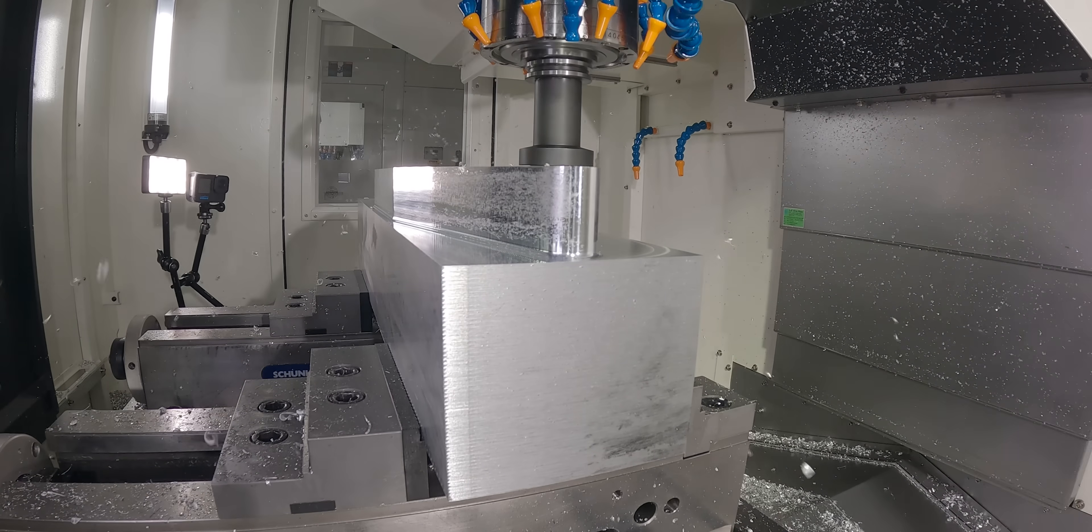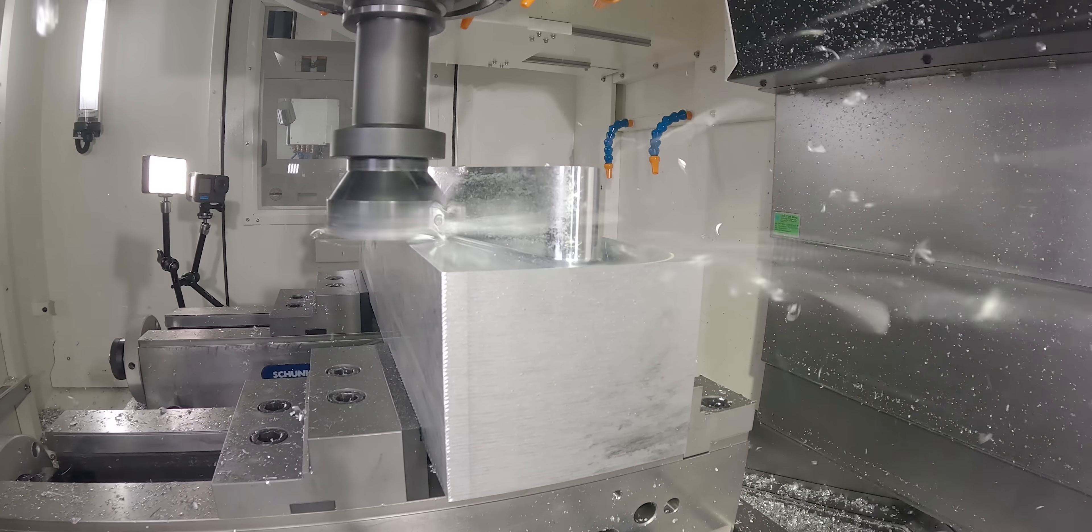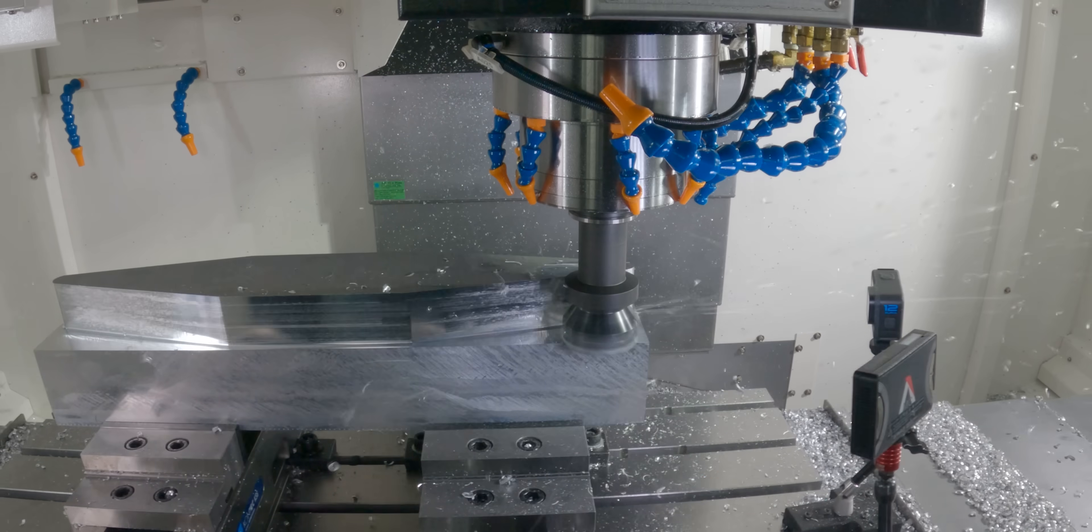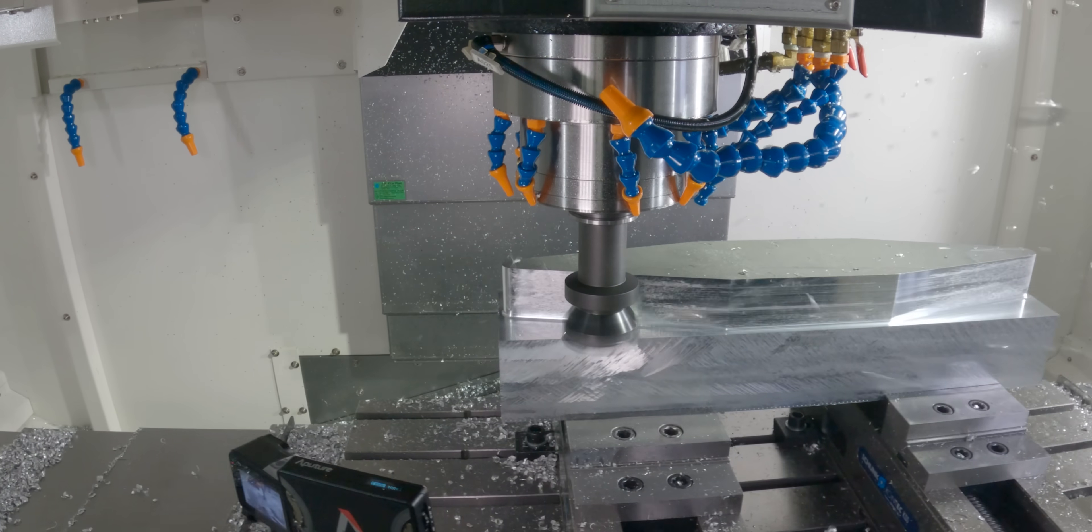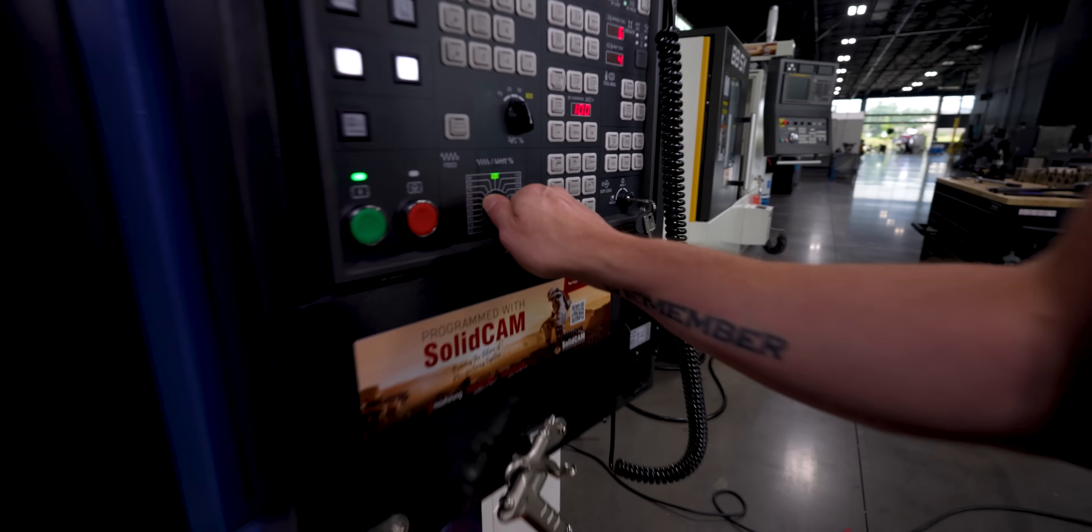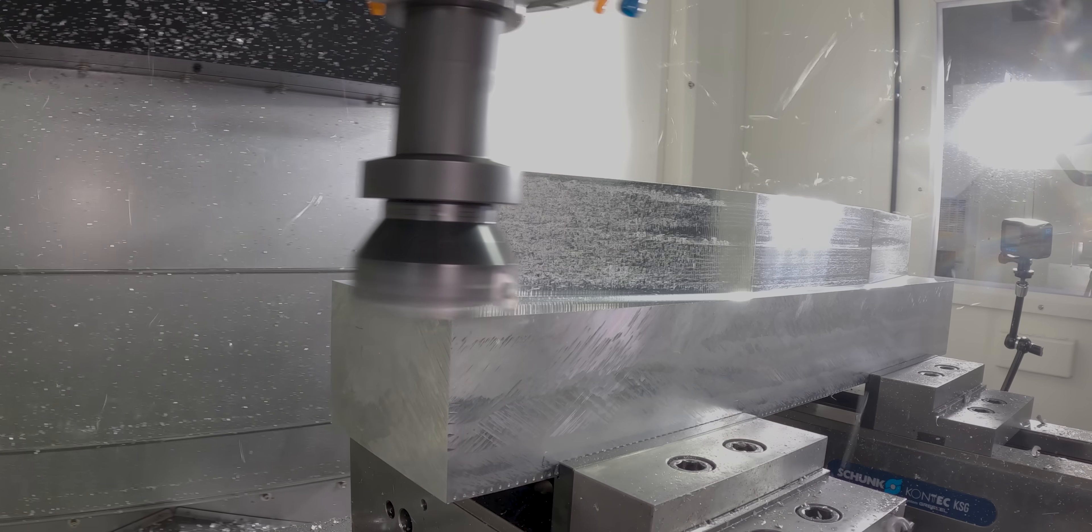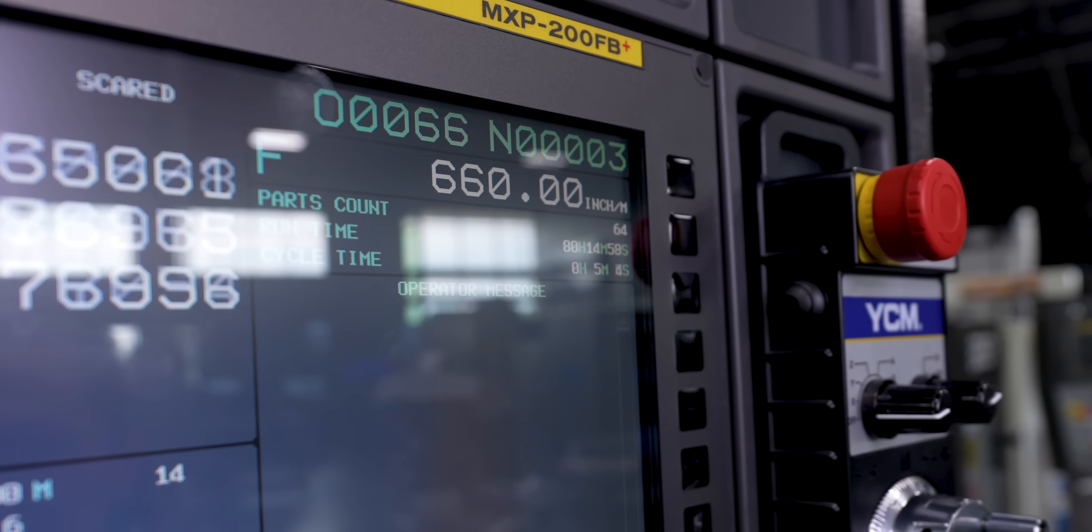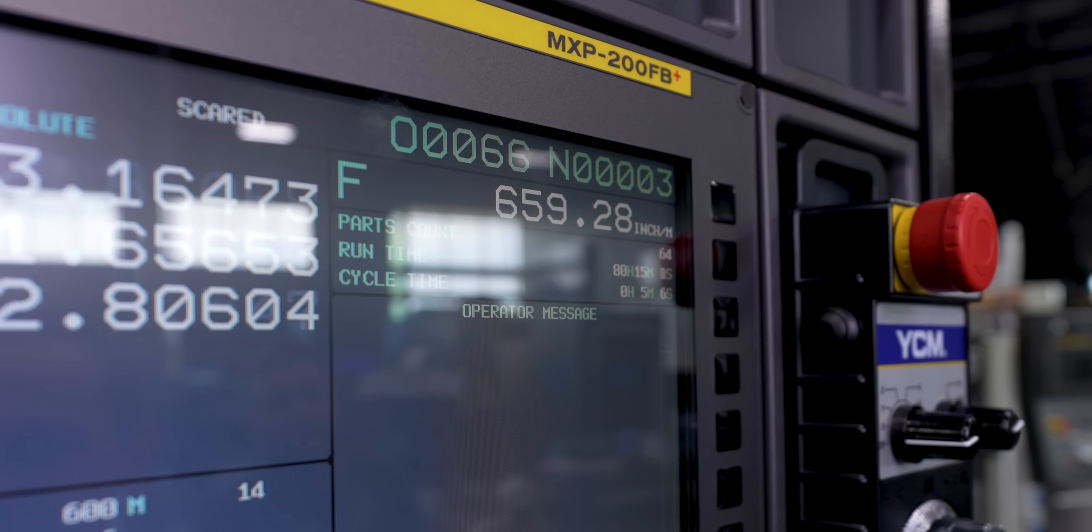It's doing it. Definitely getting spikes up on the spindle load, but this thing's just handling it. This machine is rock solid. Let's see, 660. Can we do 720?